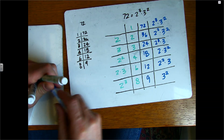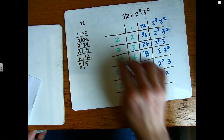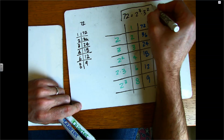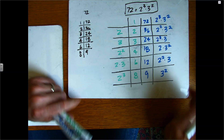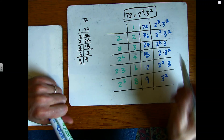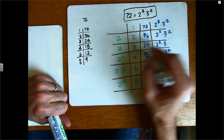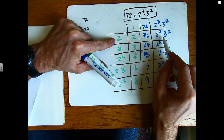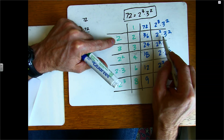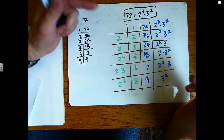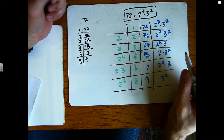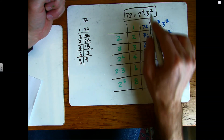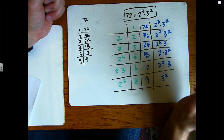Here's what I really want you to notice: how are these columns related to the number itself? When I take the prime factorization of any factor pair — say 2 and 36 — I notice that the two prime factorizations of the factors together make up the prime factorization of the number. Anytime you construct a factor pair, what you're really doing is partitioning the prime factorization of the number.